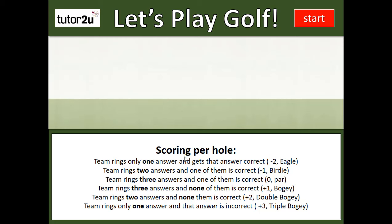Students are presented with a question and four possible answers and they have a choice. If they're absolutely certain they know the answer, they'll just ring the one they think is correct. If they're not quite so sure, they'll ring two of them. If they're very uncertain, they'll ring three. They're not allowed to ring all four. The scoring mechanism then reflects whether they've got the answer correct or incorrect.